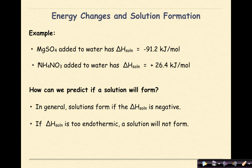Let's look at two examples. Magnesium sulfate added to water has a ΔHₛₒₗₙ of -91.2 kJ/mol, which is exothermic. We compare that to adding ammonium nitrate to water, which has a ΔHₛₒₗₙ of +26.4 kJ/mol, which is endothermic. Either of these situations can happen.